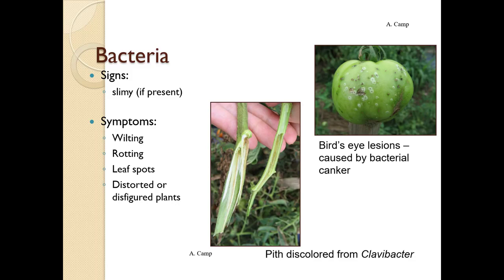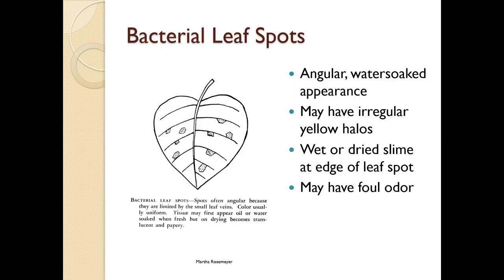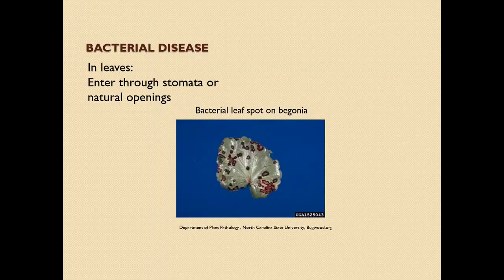Bacteria can appear slimy when present. Symptoms include wilting, rotting, leaf spots, and distorted or disfigured plants. Here we have Clavibacter causing discolored pith, and bird's eye lesions caused by bacterial canker on tomato. Bacterial leaf spots are angular and water-soaked in appearance, may have irregular orange or yellow halos, and may show wet or dried slime on the leaf spot edge with a foul odor. Bacteria need an entry point — usually a wound, but can enter through stomata or other natural openings. Here is a bacterial leaf spot on begonia.